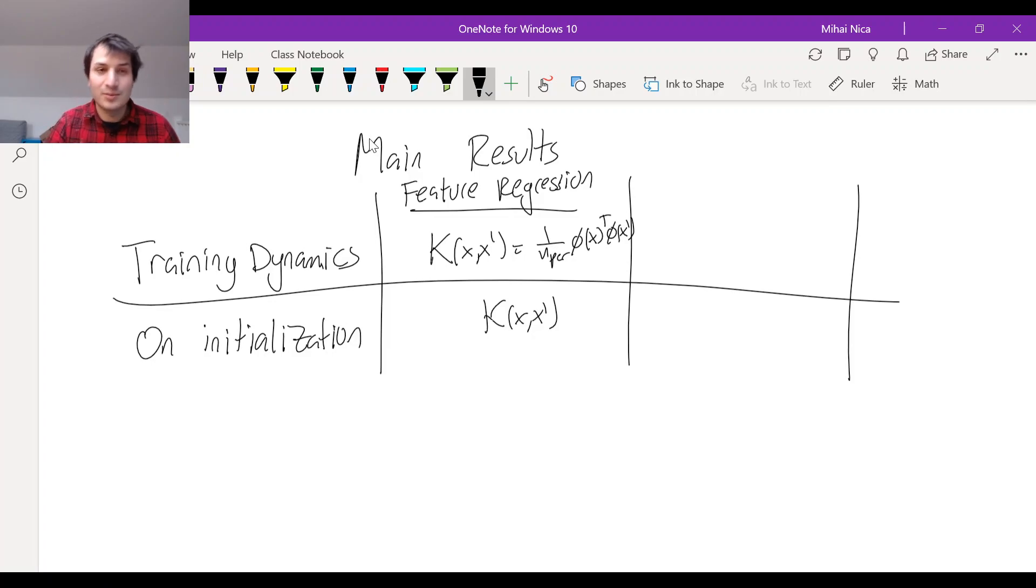But for the neural networks, or wide neural networks, there's two different kernels. One kernel does the training dynamics, and one kernel tells you what happens on initialization. And they're different.